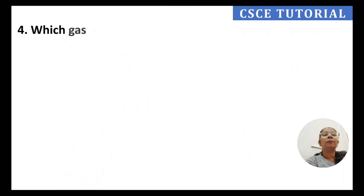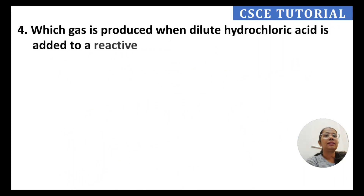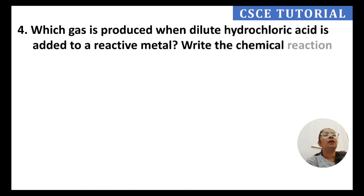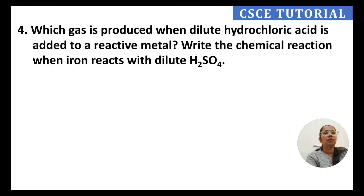Question number 4: Which gas is produced when dilute hydrochloric acid is added to a reactive metal? Write the chemical reaction when iron reacts with dilute sulfuric acid.